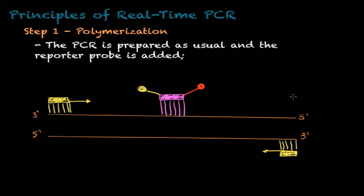On to step one of real-time PCR: polymerization. As you can see, the PCR is prepared as usual. You have a DNA template here. And as you can also see here on this side, you have a primer, this yellow structure here, and on the other side also another primer. So the same primer binding step that you see in PCR.